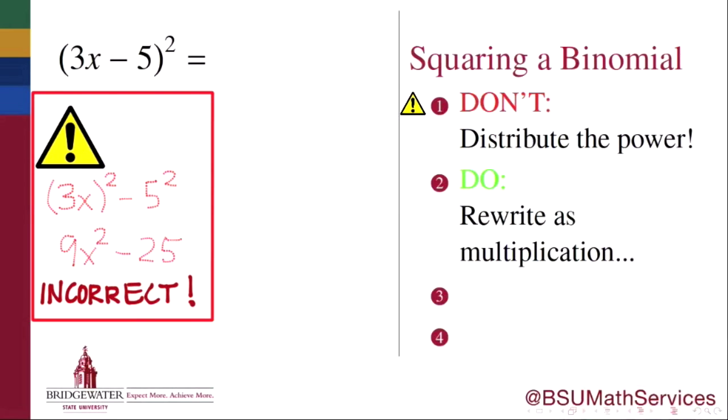So we will never go wrong in any problem where we're trying to simplify a power of an expression by rewriting that expression using multiplication instead. So instead of thinking of this as a problem involving the exponent of 2, we'll instead think of it as multiplying the quantity, 3x minus 5, by itself. Turning this power problem into a multiplication problem is the key to navigating this simplification problem correctly.